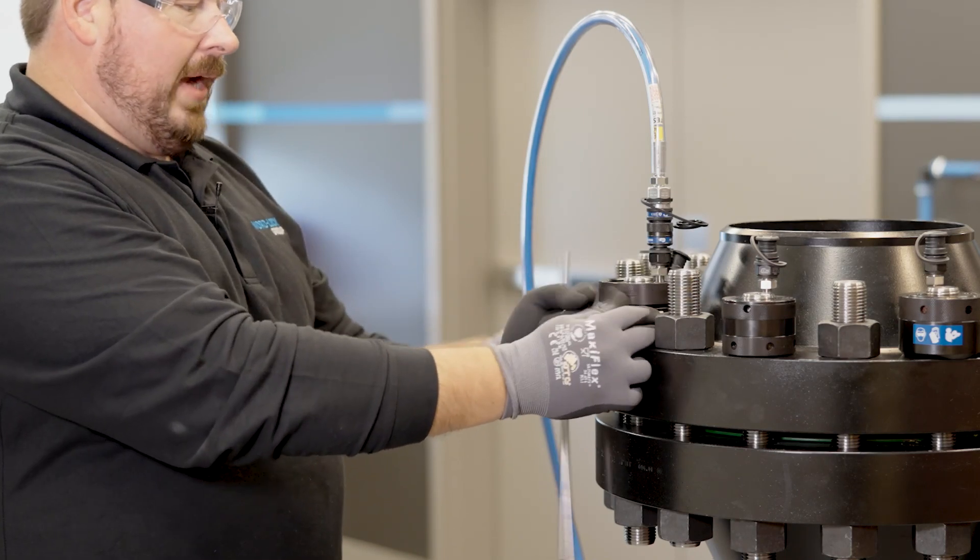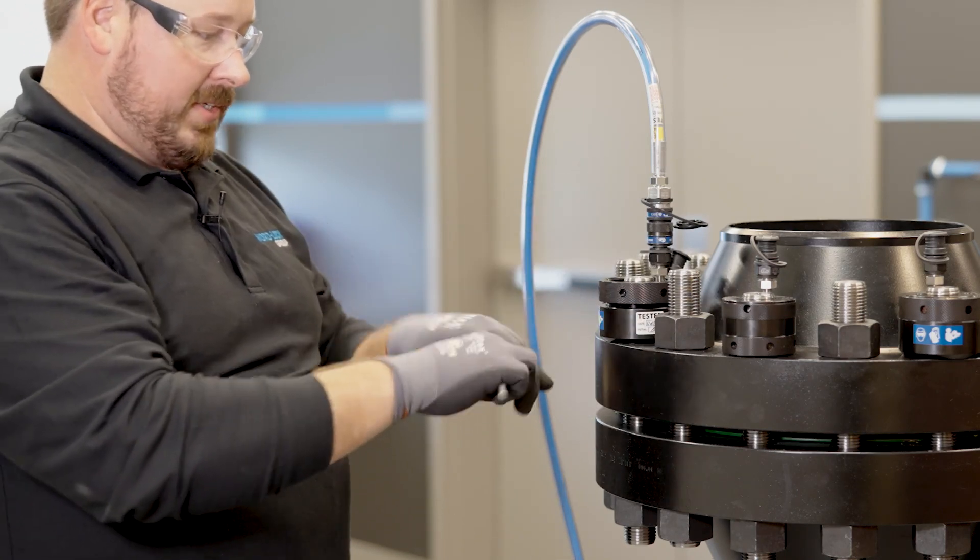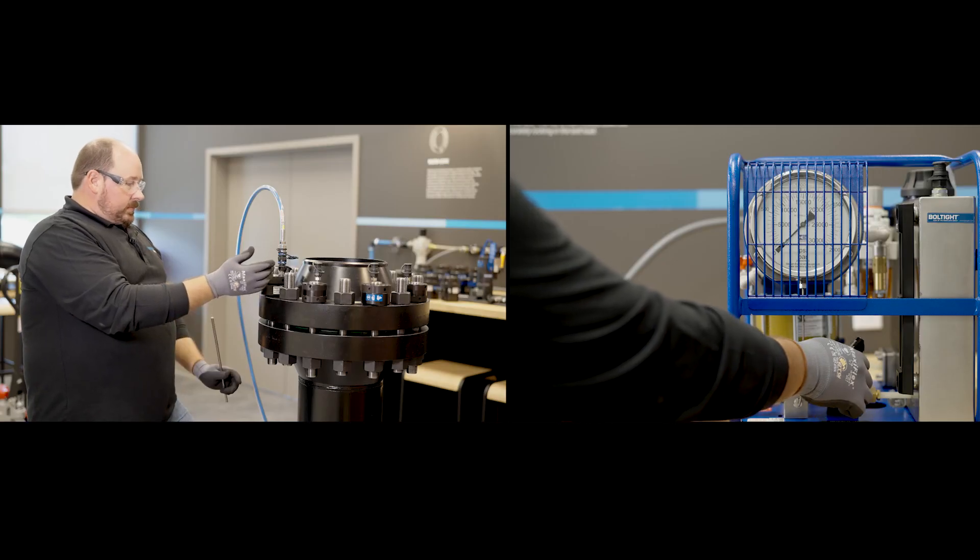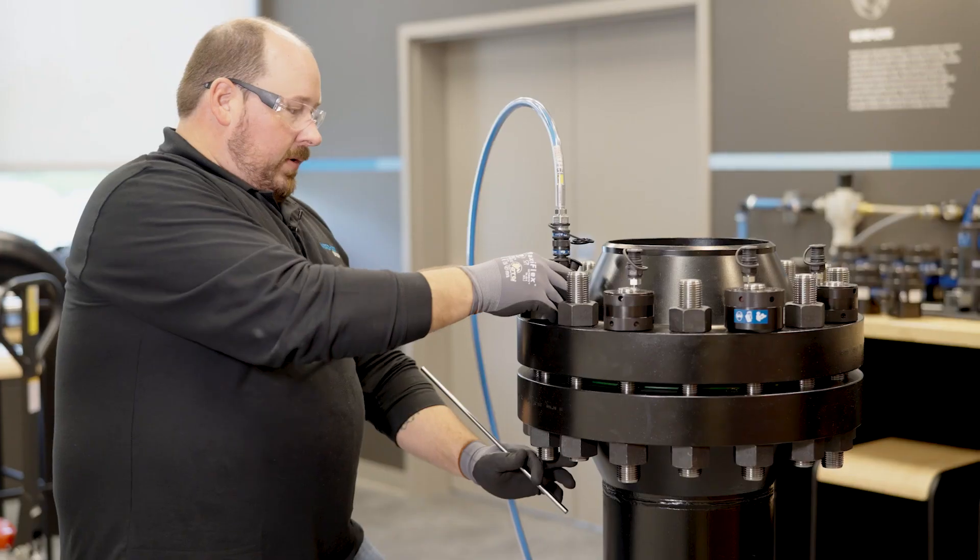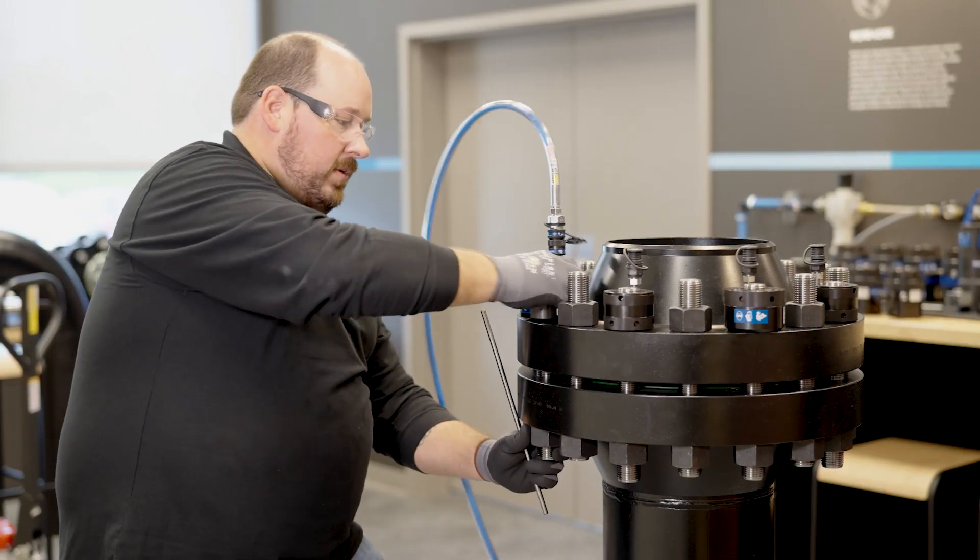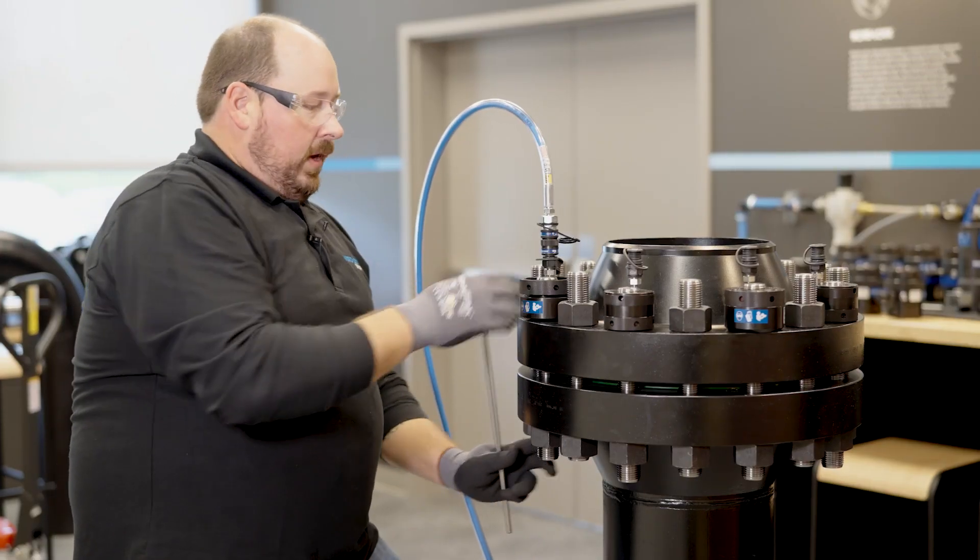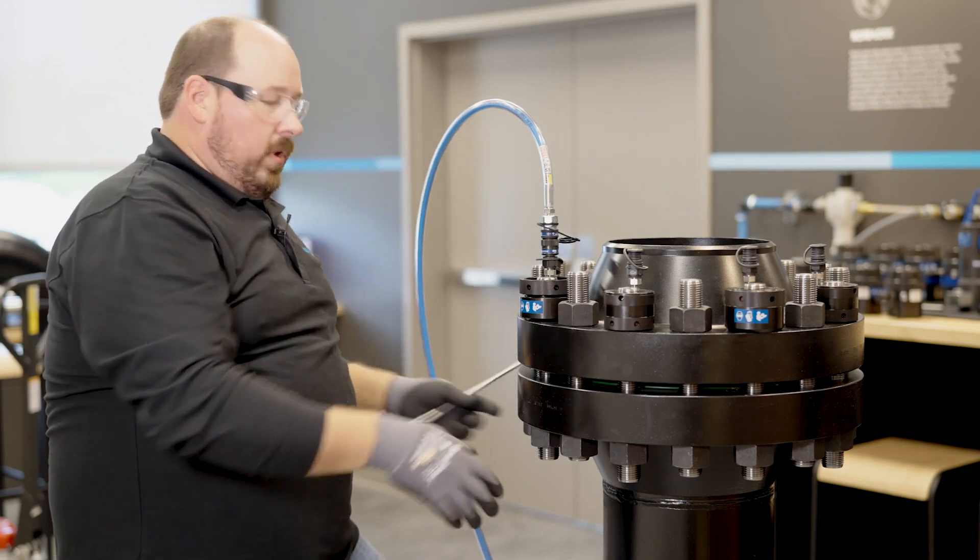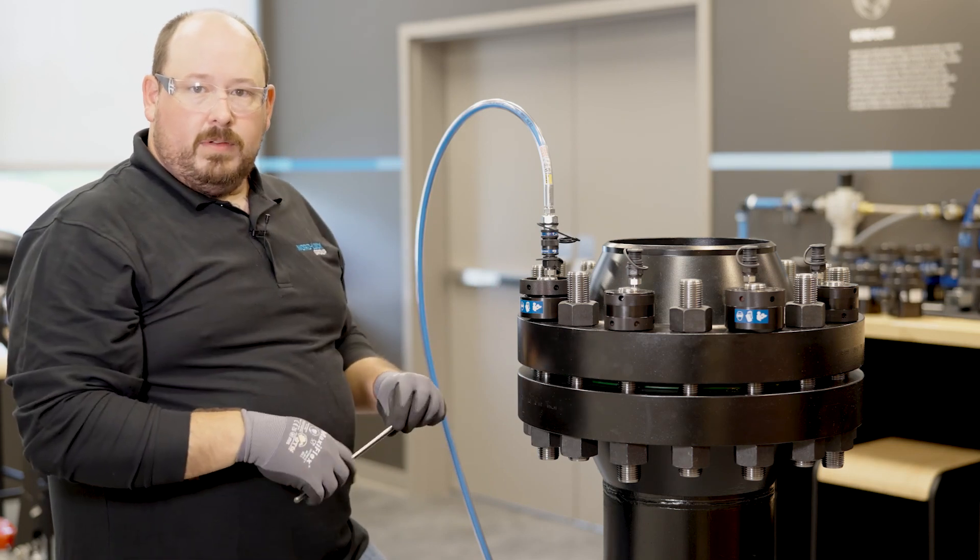Now once you get it broken loose, you just want to back the collar off so that when it relaxes, it doesn't lock down again. So go ahead and release. All right, there we go. Now the nut's loose and I can turn it with my hand, and then we'd simply do that all the way around the flange. We come off the nuts and pull all the bolts out and do whatever work you need to do after that.